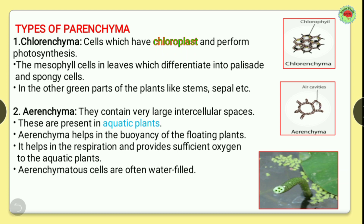Now let's discuss aerenchyma. Aerenchyma contains very large intercellular spaces. The word 'aeren' means it has air cavities. These are present in aquatic plants only. Aerenchyma helps in the buoyancy of floating plants, assists in respiration, and provides sufficient oxygen to aquatic plants. Aerenchyma cells are often water filled and can hold air, which helps in floating.